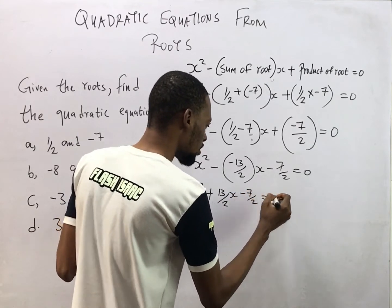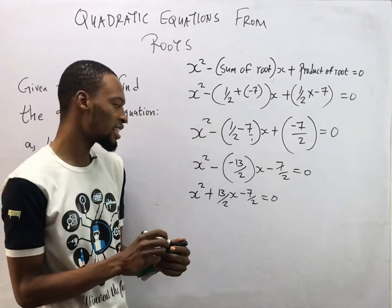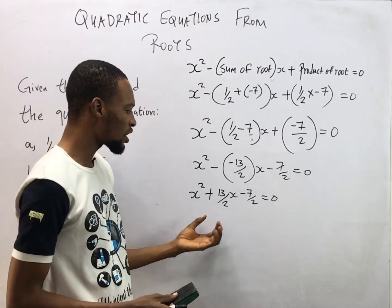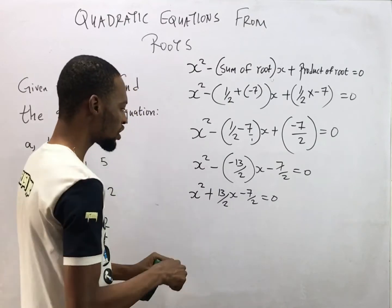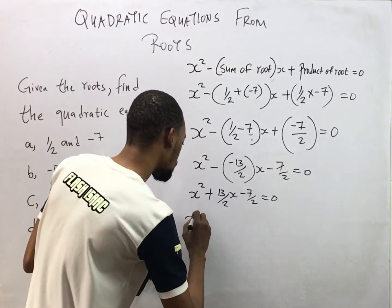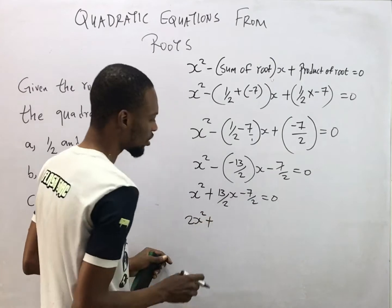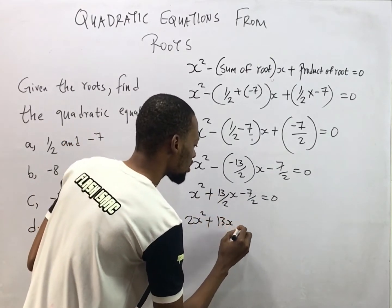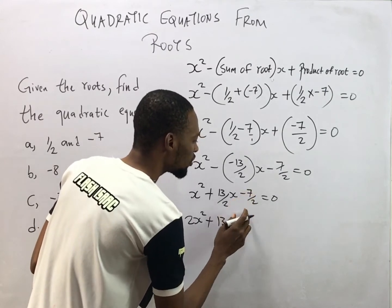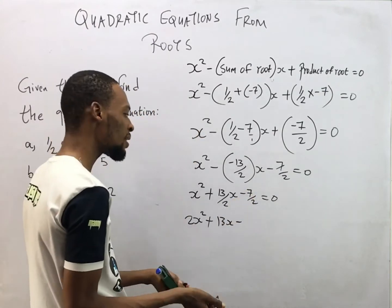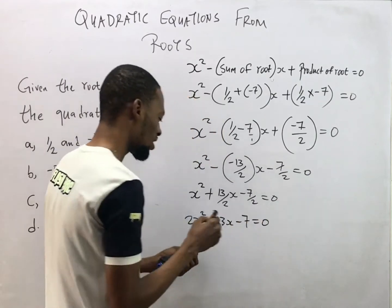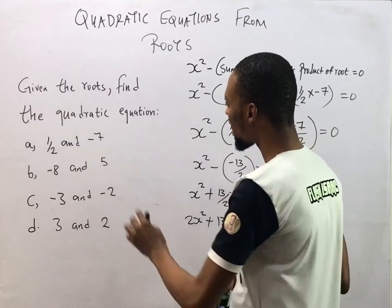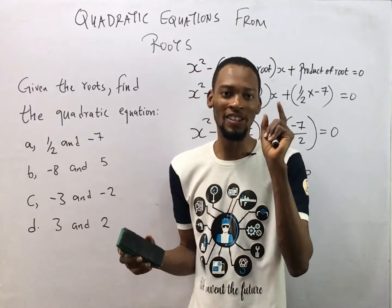This becomes s² + 13/2 s - 7/2 = 0. To eliminate the fractions we multiply everything by 2: 2s² + 13s - 7 = 0. That is the quadratic equation whose roots are 1/2 and -7.